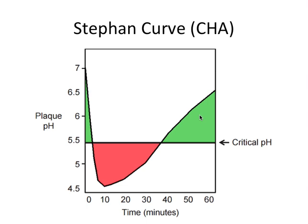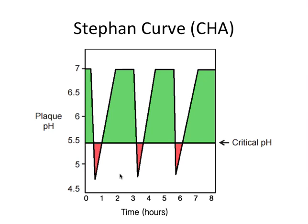This graph is also a Stephan curve, but this time we change the time axis to hours. We have the same plaque pH on the y-axis, and this time hours on the x-axis, so we can look at the span of an eight-hour workday.